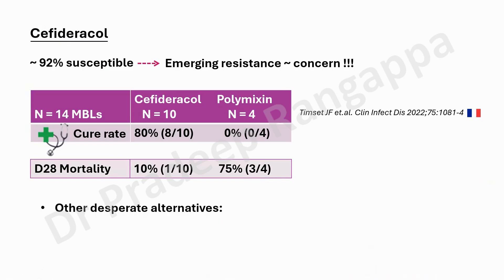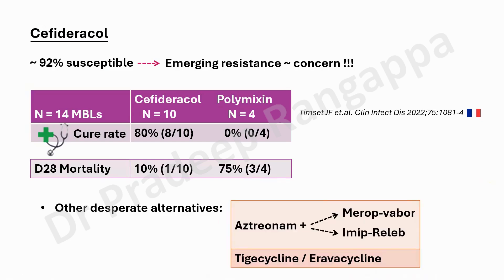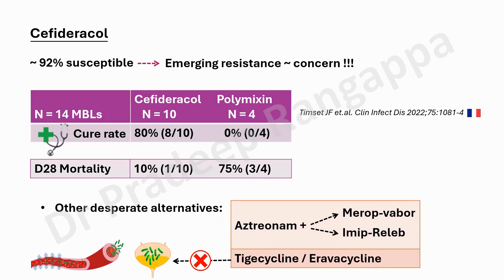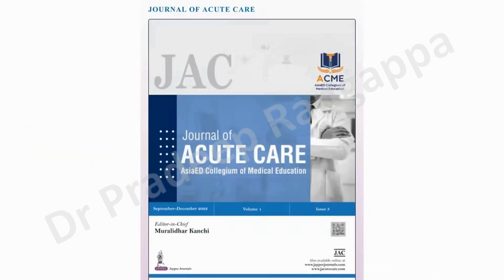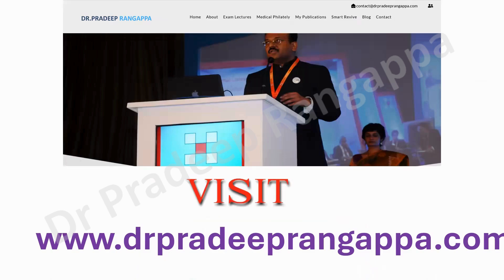If for whatever reason you are unable to use ceftazidime-avibactam — which is readily available in India — desperate alternatives include aztreonam plus meropenem-vaborbactam, or aztreonam plus imipenem-relebactam. Tigecycline and eravacycline have been suggested but cannot be used for UTI or bacteremia, which are the most common presentations in ICU. So in summary: use ceftazidime-avibactam plus aztreonam for NDM/MBL CREs, and do not use polymyxin or colistin for these infections.